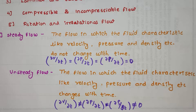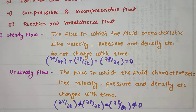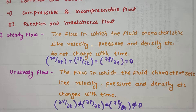The first type of flow is steady and unsteady flow. Steady flow is the flow in which the fluid characteristics like velocity, pressure, and density do not change with time. The particles in the fluid have fixed characteristics, and we can mathematically represent it as ∂v/∂t = ∂p/∂t = ∂ρ/∂t = 0.